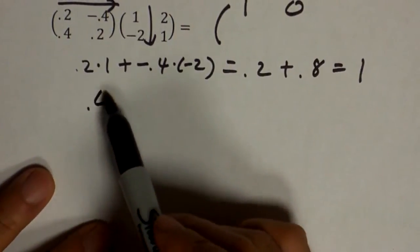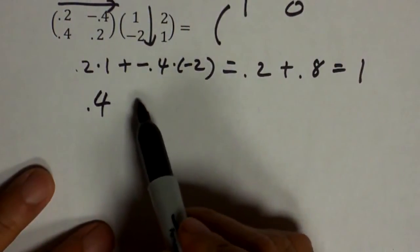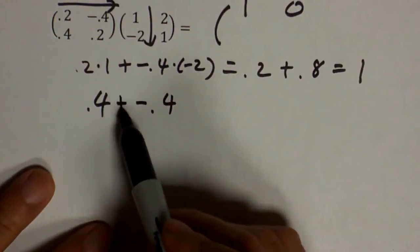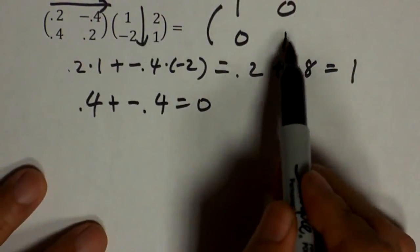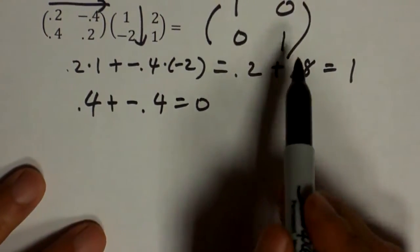This times that is point four. This times that is negative point four. Adding the two together, you get zero.